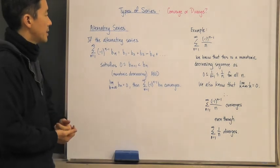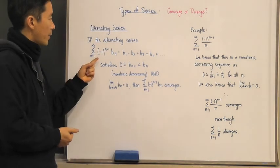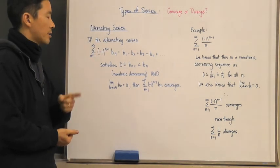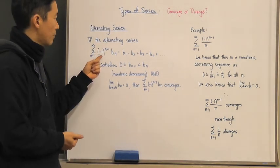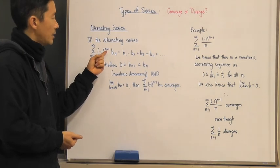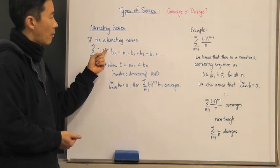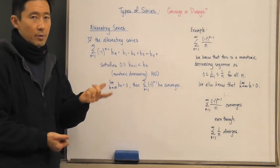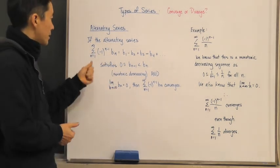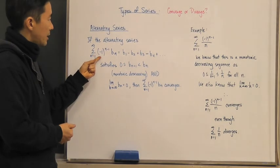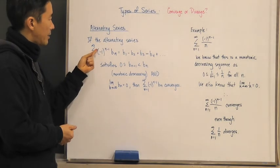When we have an alternating series, we're going to have negative one raised to the n, or n minus one, or n plus one — this is the alternating series factor.